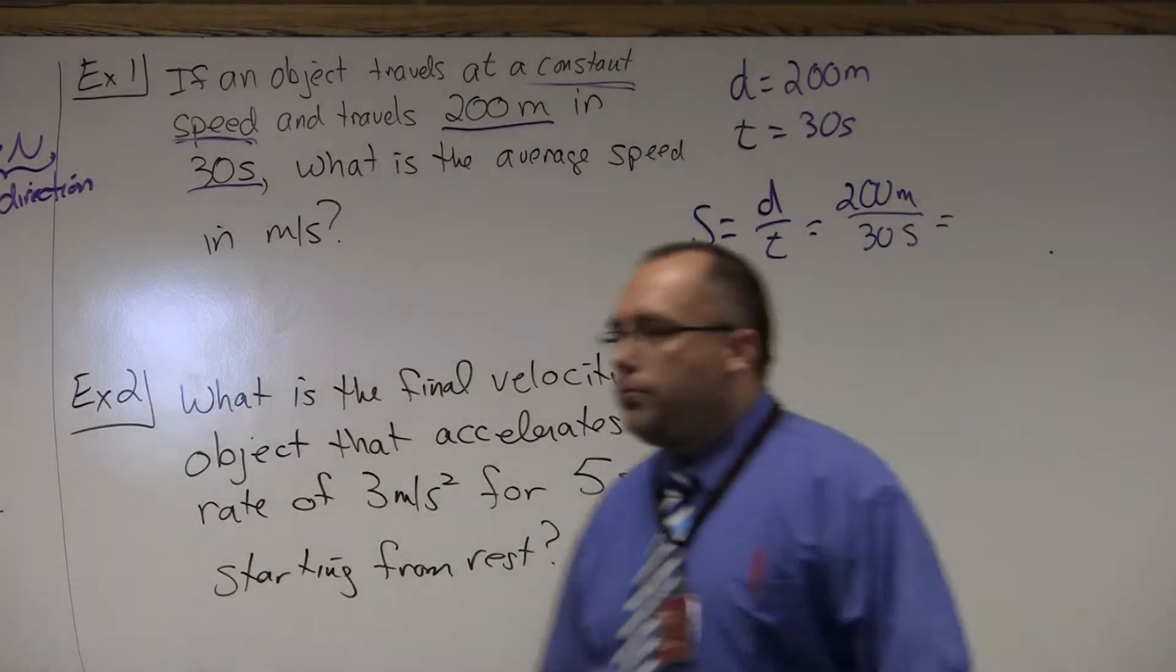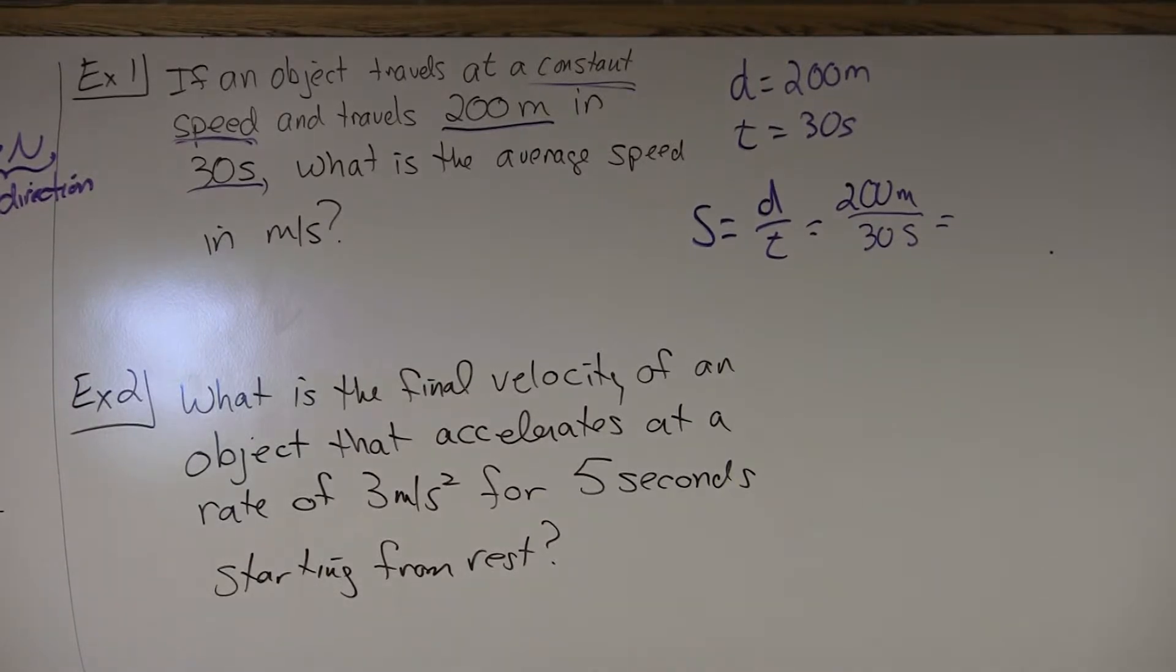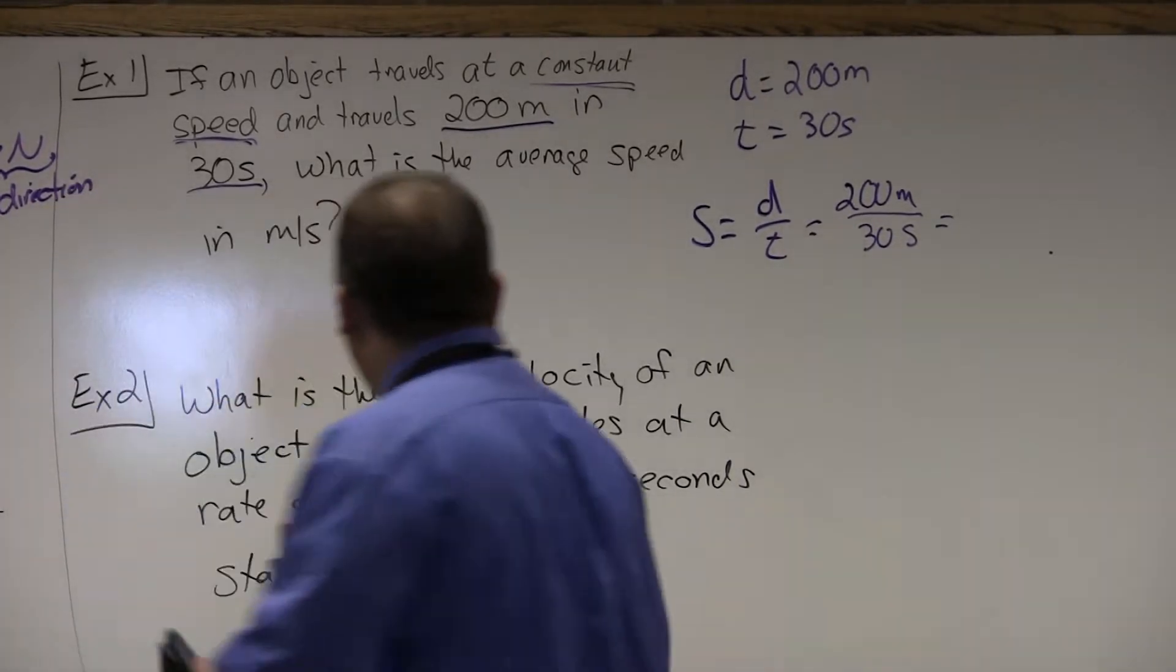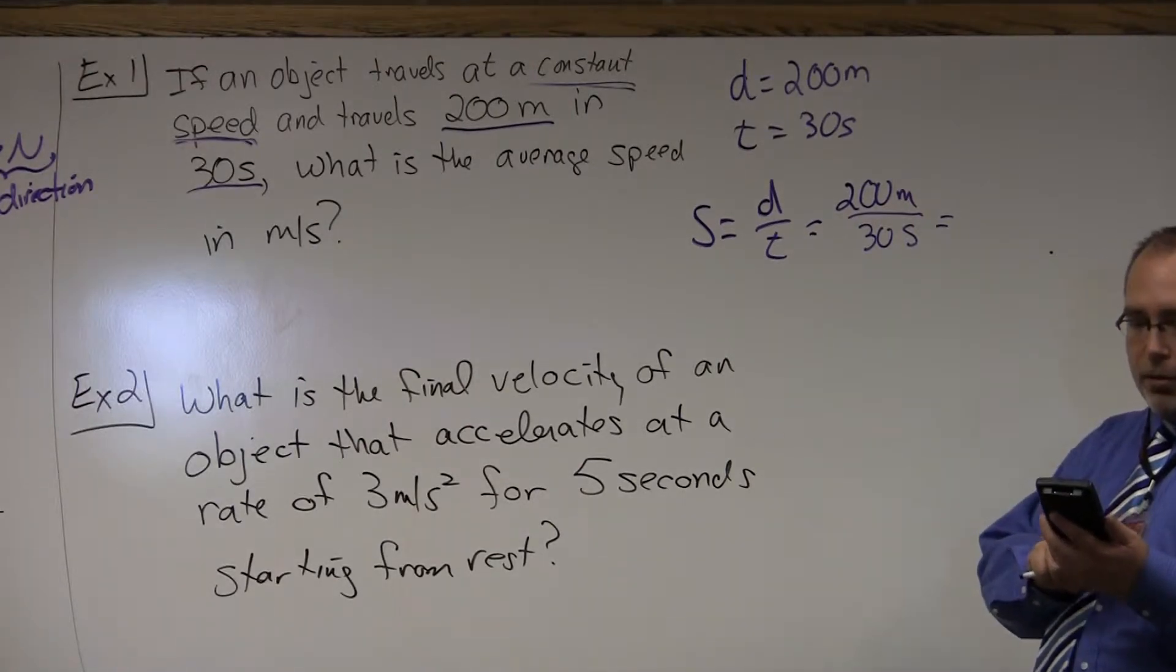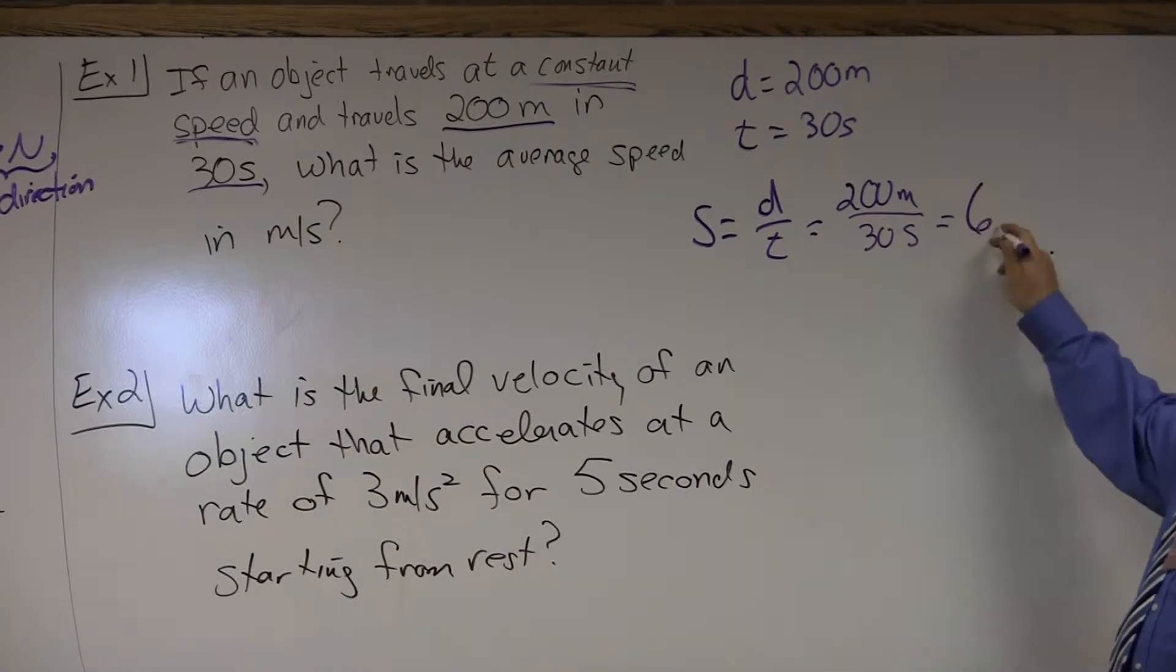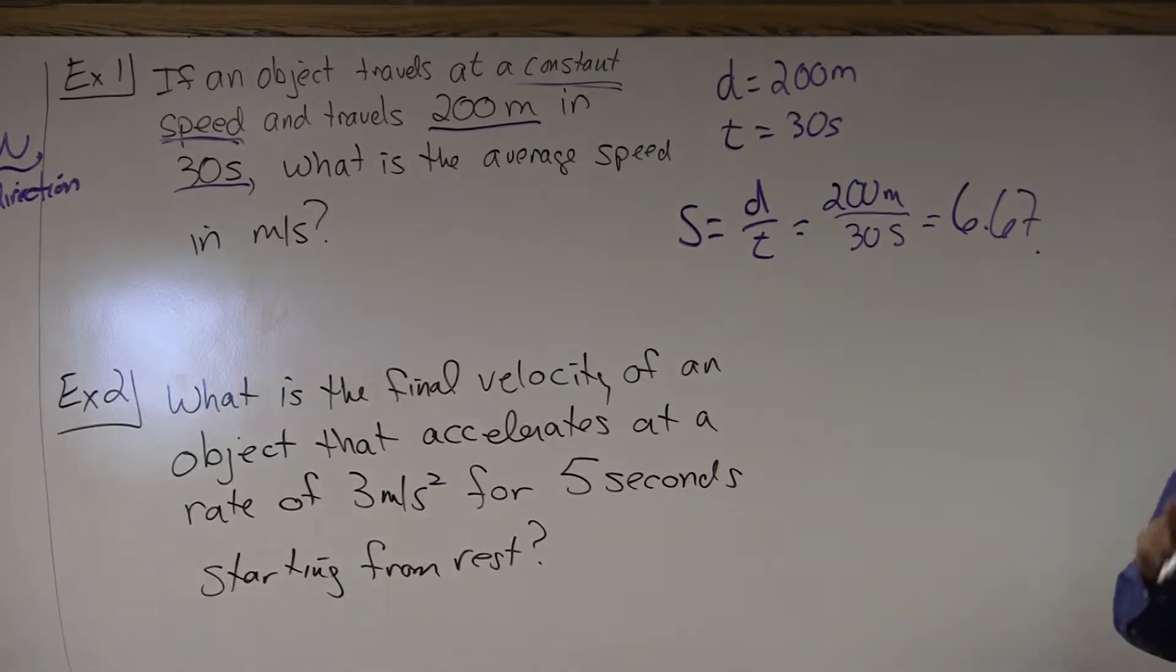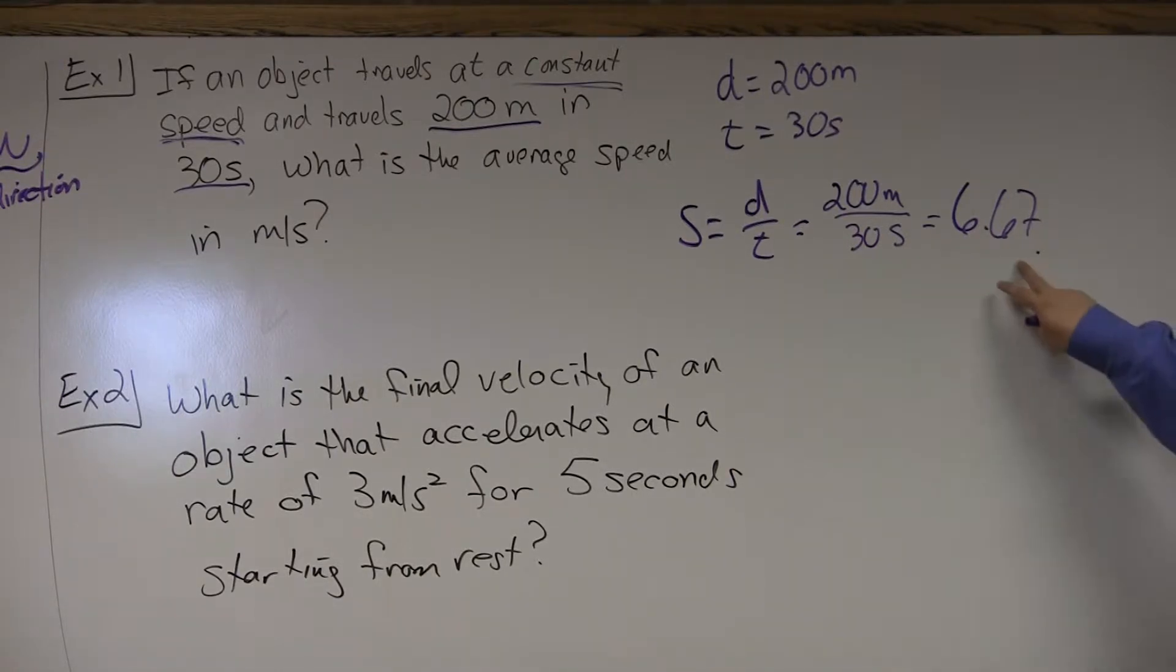And if you get your calculator, which I have right here, and you take 200 divided by 30. Don't try to do it in your head. You have a calculator, let it do it for you. 200 divided by 30 simply gives us 6.67 if I round it to two decimal places, which is more than enough.